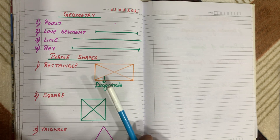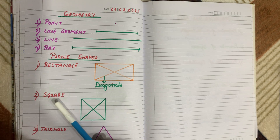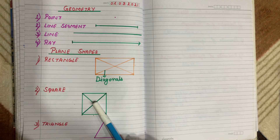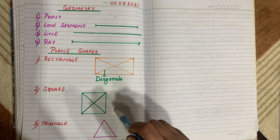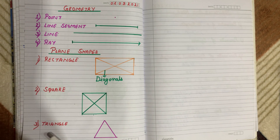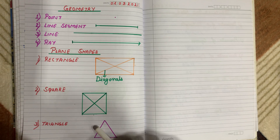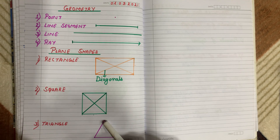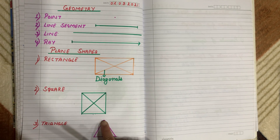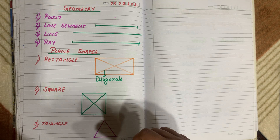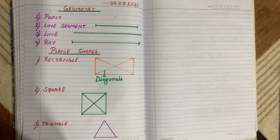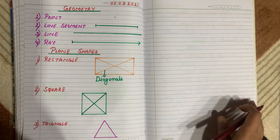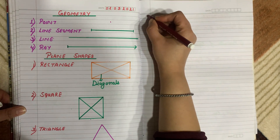A square has all sides equal and it also has four sides. Then we learned about the triangle — a triangle has three sides and three vertices. Vertices are the points joining two lines.